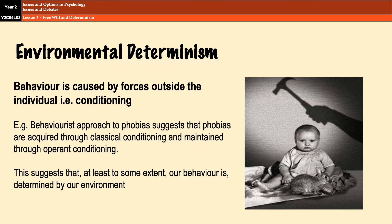Environmental determinism refers to the view that behavior is caused by forces outside of the individual — it's effectively behaviorism. Any approach or explanation that's got behaviorism in it is going to be environmentally deterministic. B.F. Skinner, for example, argued that all behavior comes from conditioning, and whilst we might think we're acting independently, our experience of choice is merely the sum total of our conditioning history acting on us our entire lives. An example from the curriculum is the behaviorist approach to phobias, which suggests that phobias are acquired through classical conditioning and are maintained through operant conditioning. Learning theory applied to attachment is another example that would be environmentally deterministic.